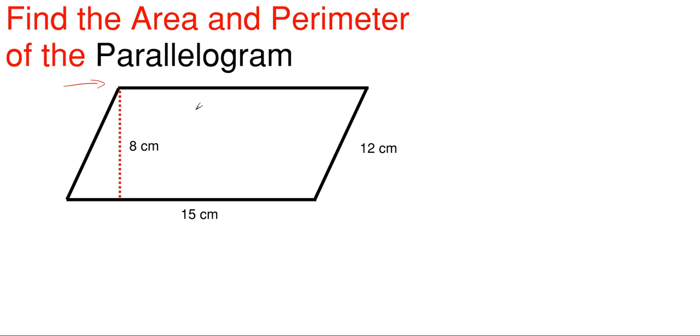So with the two sets of equal sides, what that means is that we have 15 centimeters here for the bottom, which means that we are 15 centimeters here at the top, and the slanted side over here is 12 centimeters long, which means that this slanted side over here is 12 centimeters long.